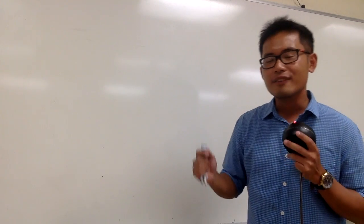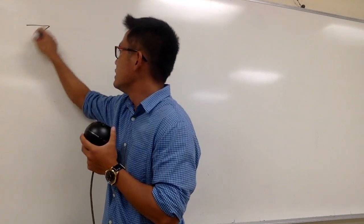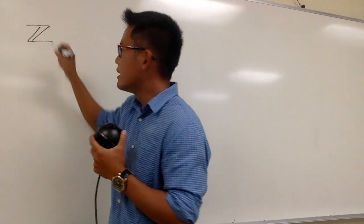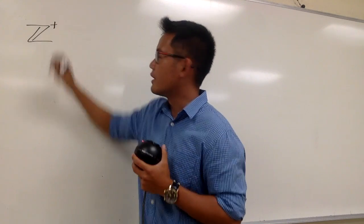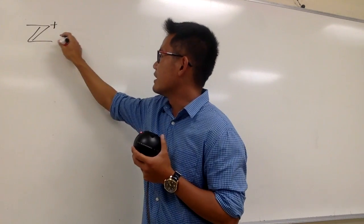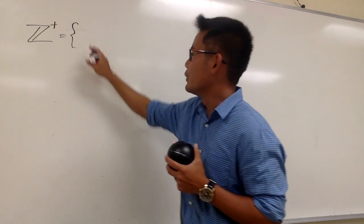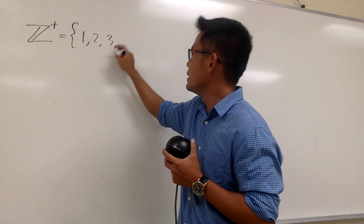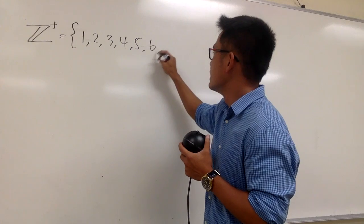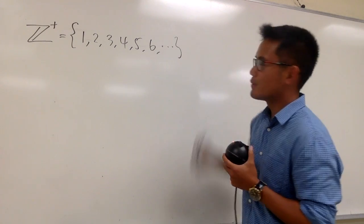Let's take a look at the set of all the positive integers. In notation, I will write this down as Z+. So this right here is just the set of all the positive integers — namely, we have 1, 2, 3, 4, 5, 6, 7, 8, 9, 10, 11, so on and so on.